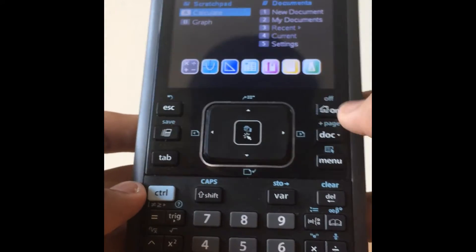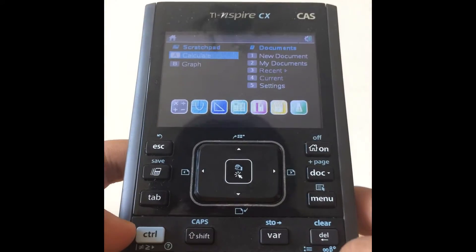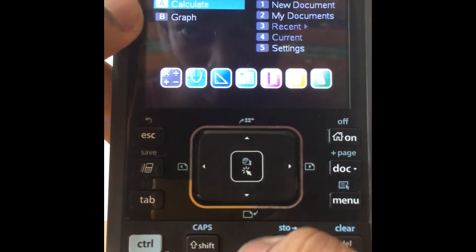If you want to turn it off, press ctrl and then on. To make it to the calculator, just press enter when you're over calculator.